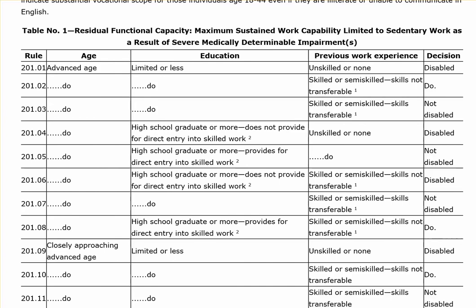I apologize — I have some drainage going on with my nasal, so pardon me ahead of time. Once you come down here to this table, it gives you the rule number in this column here. It tells you the age — it says 'advanced stage' — and it'll explain what advanced stage is.